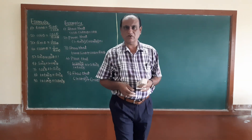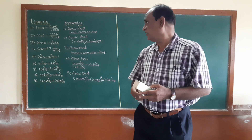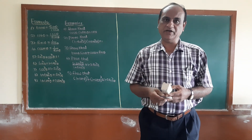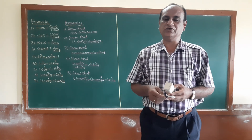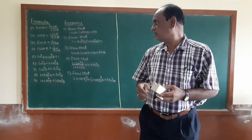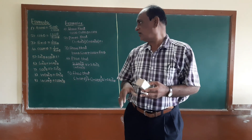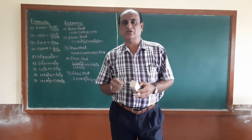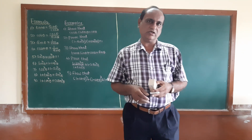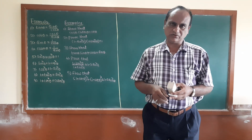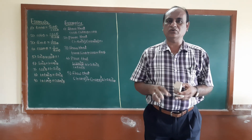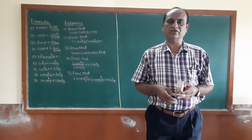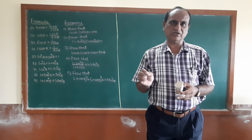Cot theta means cos theta divided by sine theta. Sec theta means 1 divided by cos theta. Cosec theta means 1 divided by sine theta. Sine squared theta plus cos squared theta is equal to 1. Sine squared theta is equal to 1 minus cos squared theta. Cos squared theta is equal to 1 minus sine squared theta. 1 plus tan squared theta is equal to sec squared theta.